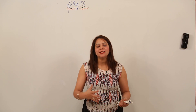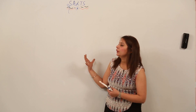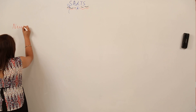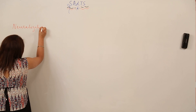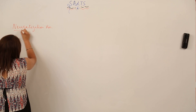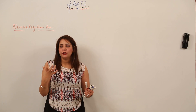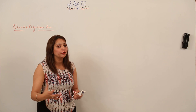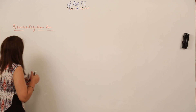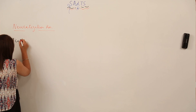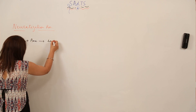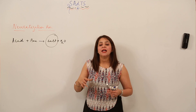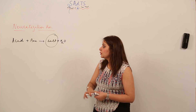Now, as you are familiar with acids and bases, we are going to start with salt. Salt is formed by a reaction called neutralization reaction. The name makes it clear — it is a reaction that leads to the formation of a neutral substance. Whenever we react an acid with a base, we get salt and water. This is how salt is formed via the neutralization reaction.